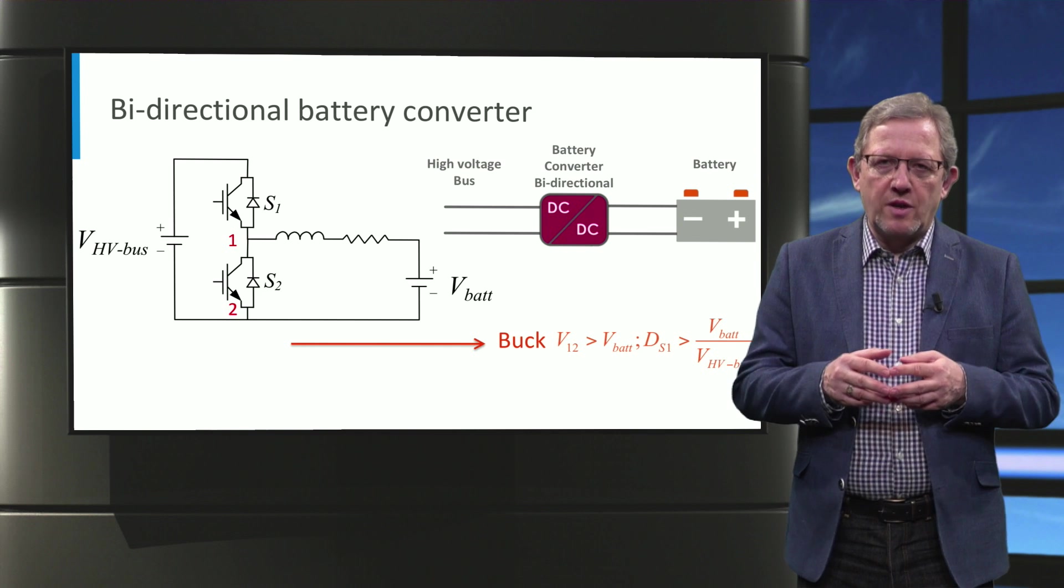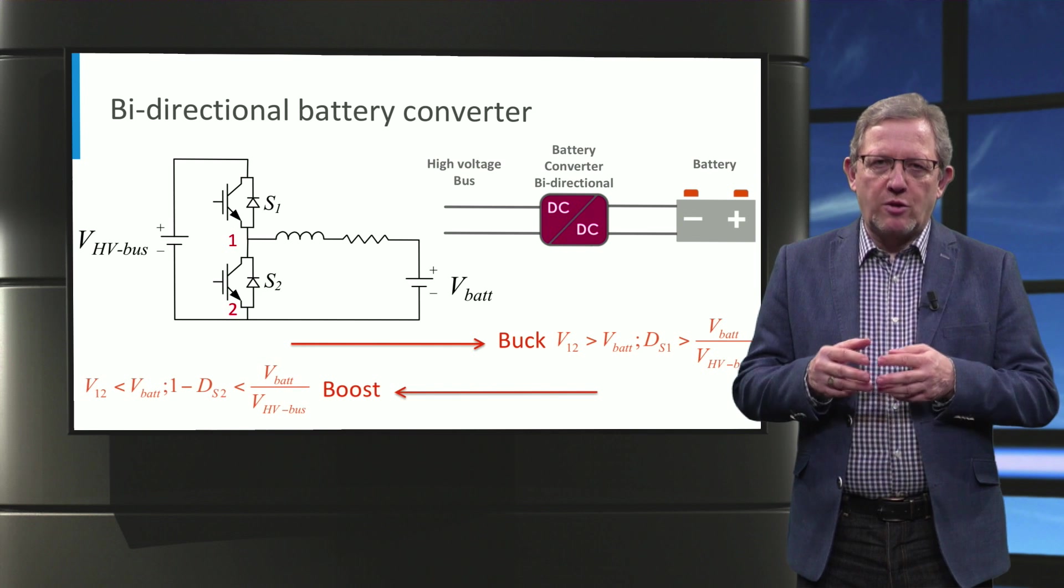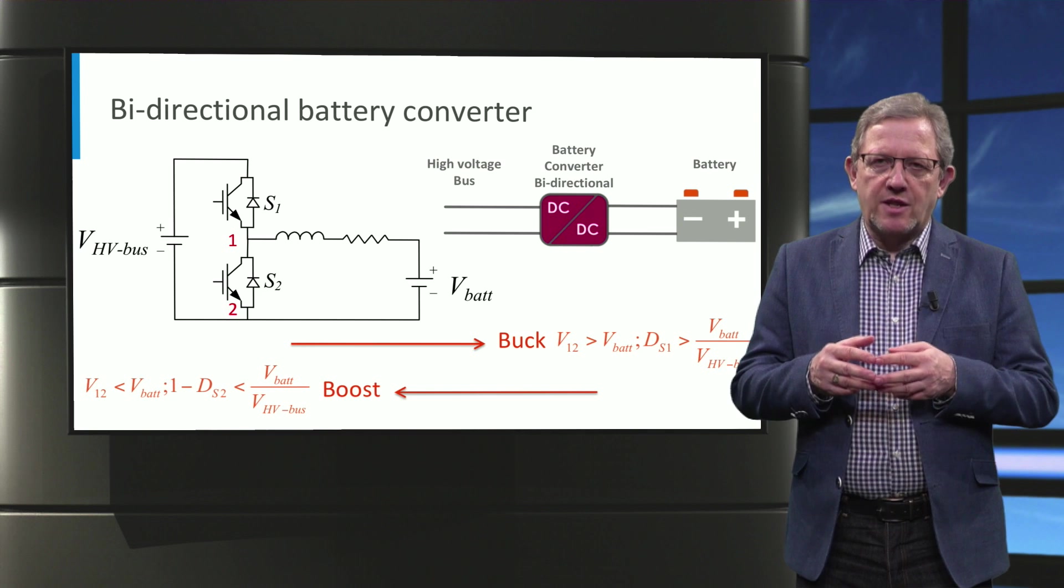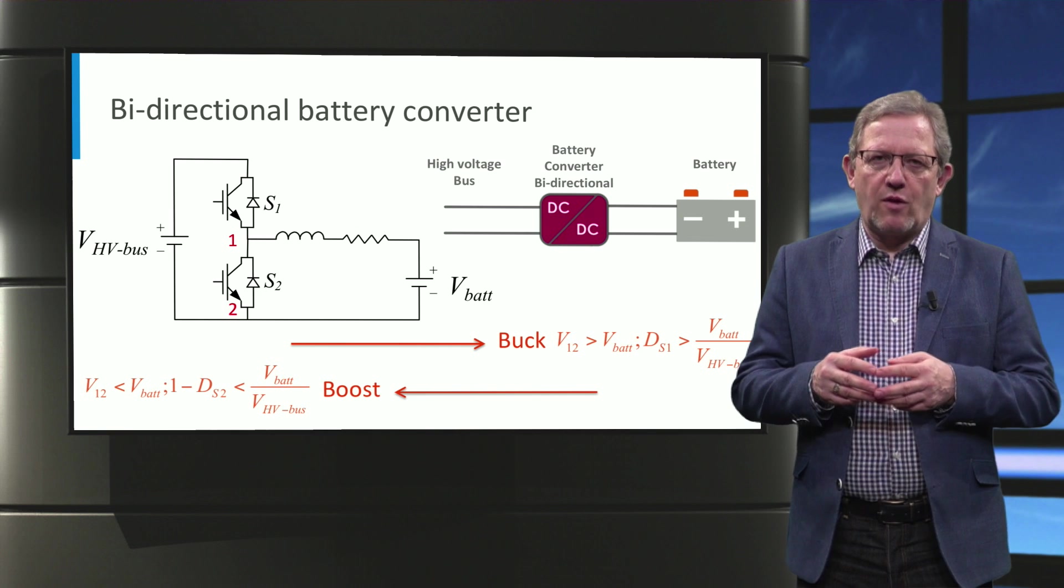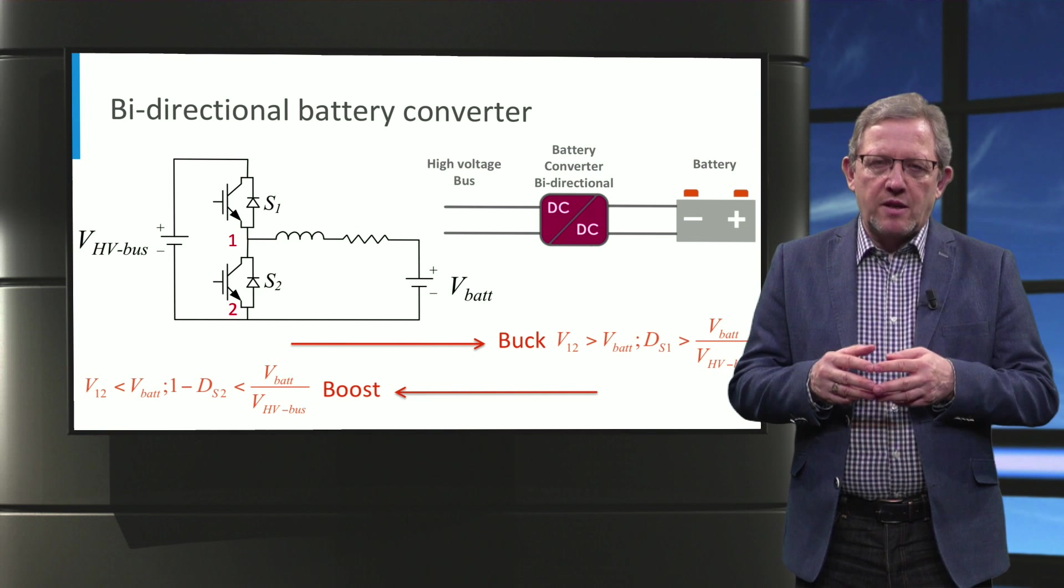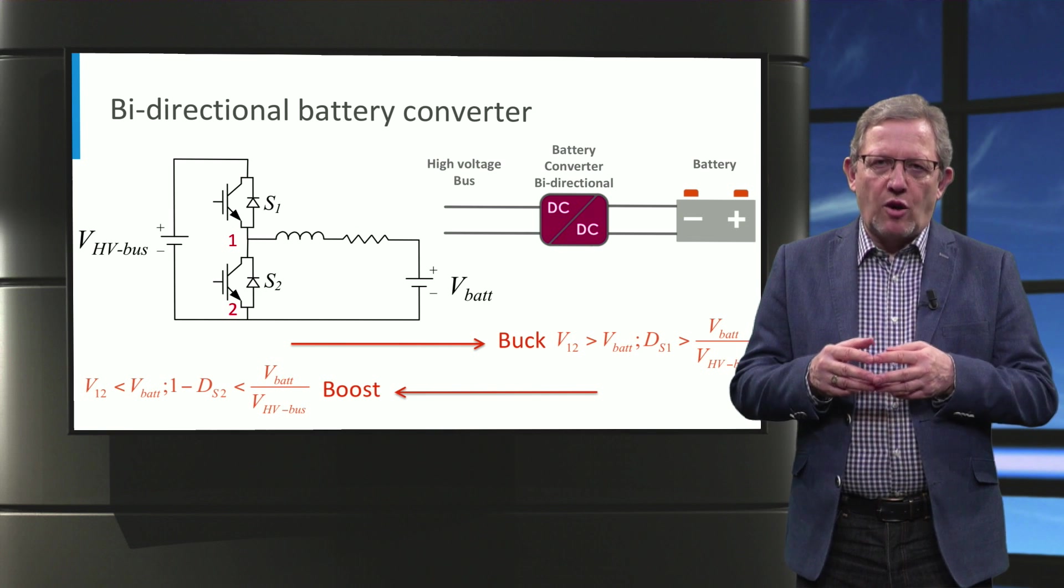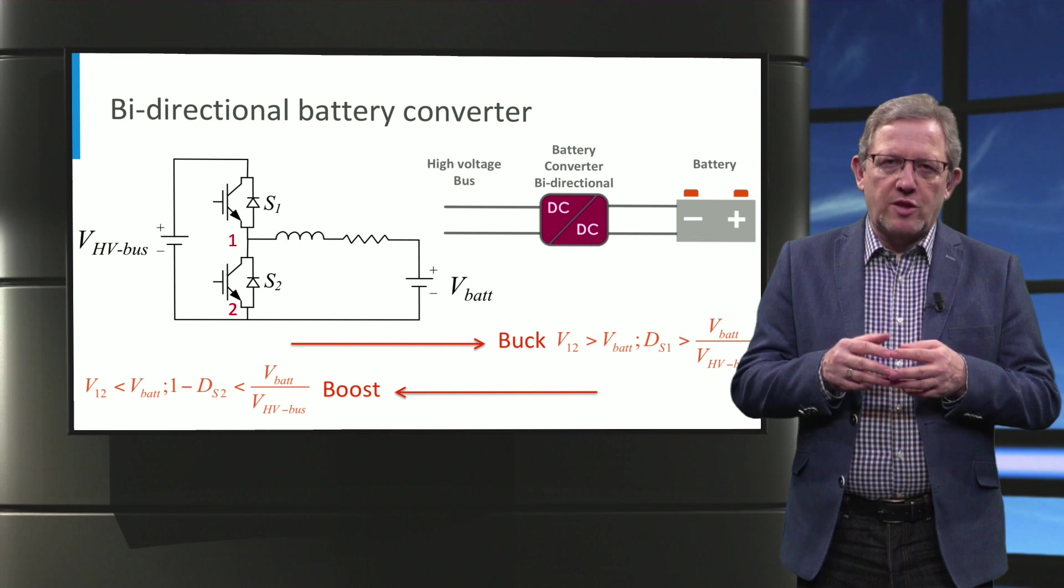On the other side, this converter works in the boost mode when the battery is powering the motor. It happens when D_S1 creates average voltage on terminals 1 and 2 smaller than battery voltage. And remember, the duty cycle of switch S2 is always equal to 1 minus the duty cycle of S1.